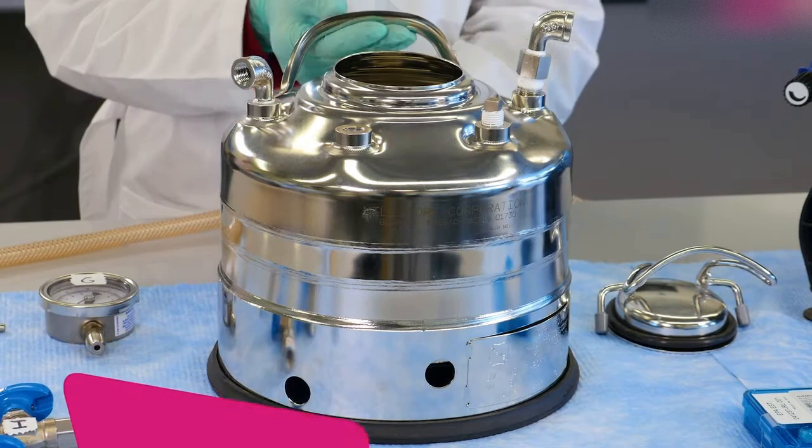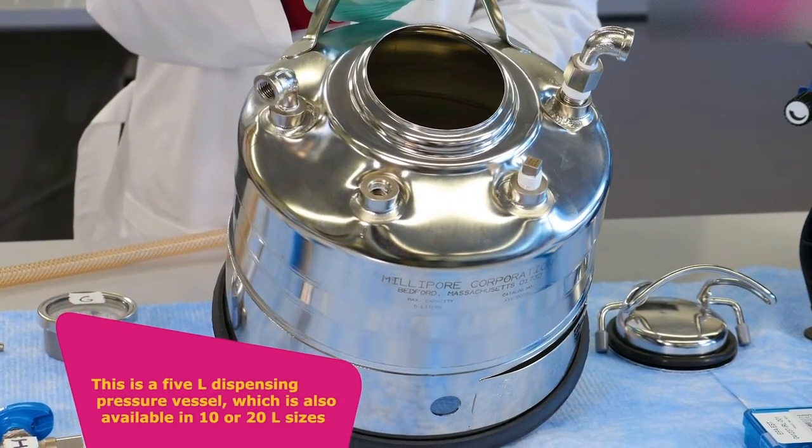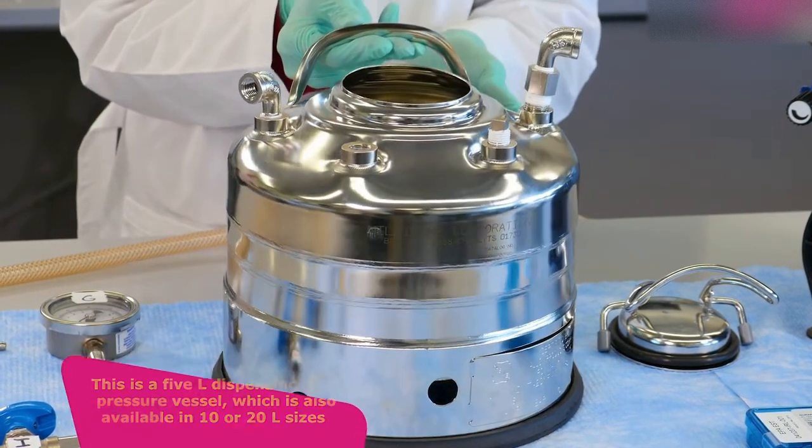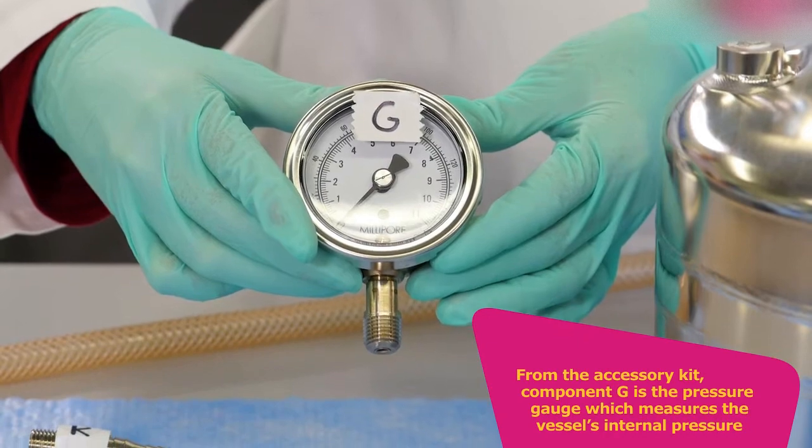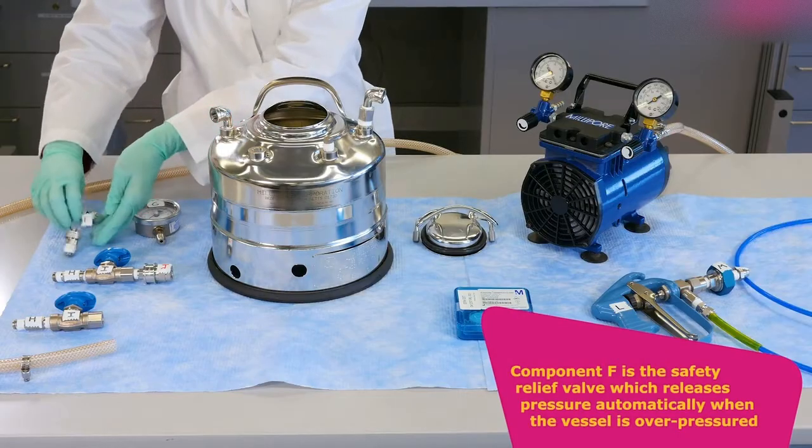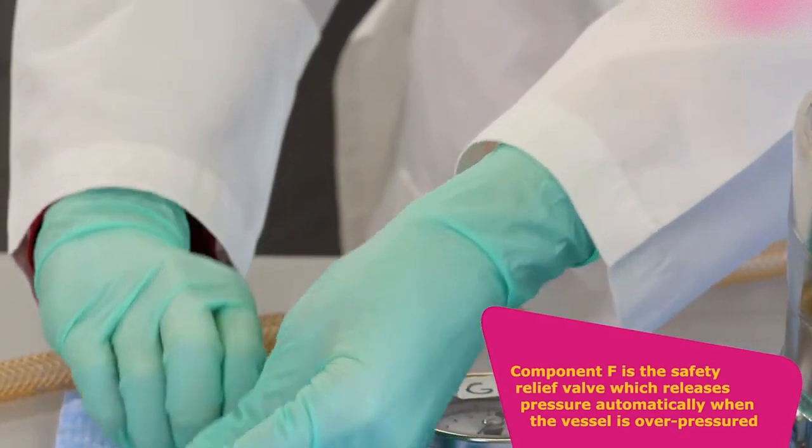This is a 5-liter dispensing pressure vessel, which is also available in 10 or 20 liter sizes. From the accessory kit, component G is the pressure gauge, which measures the vessel's internal pressure. Component F is the safety relief valve, which releases pressure automatically when the vessel is overpressured.